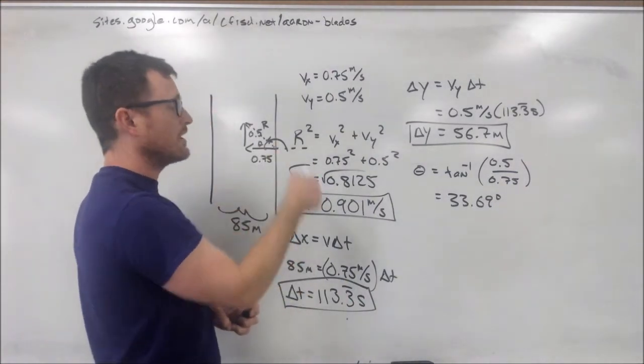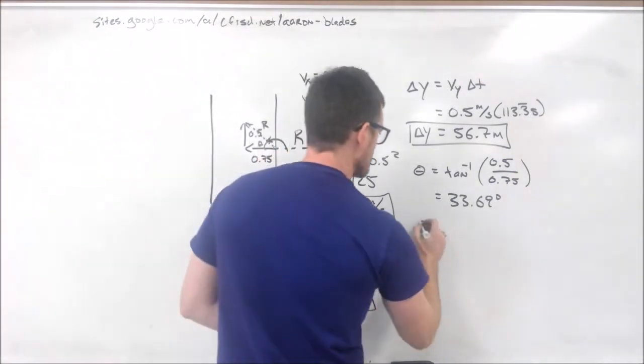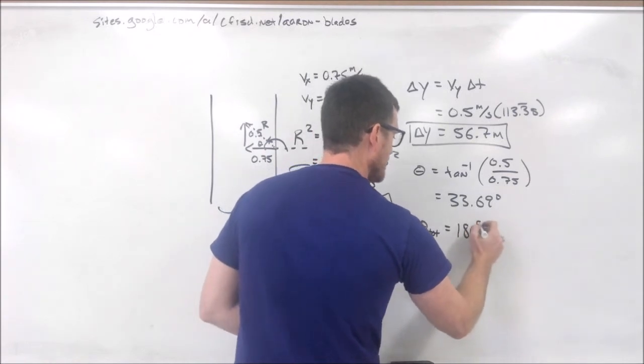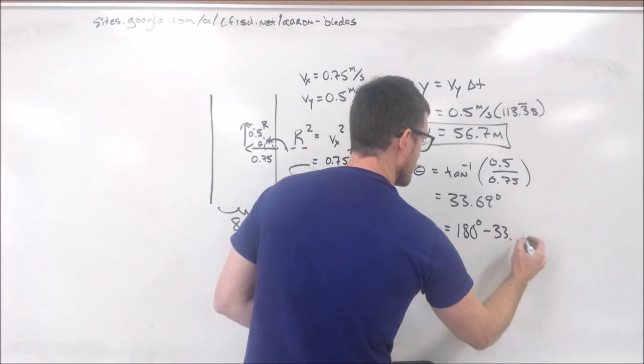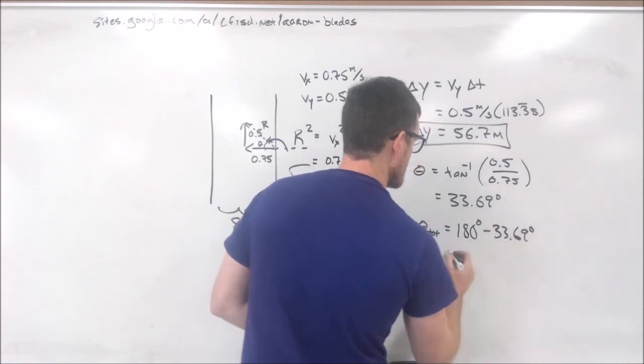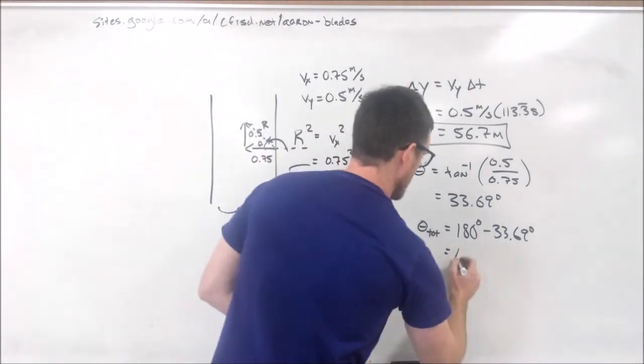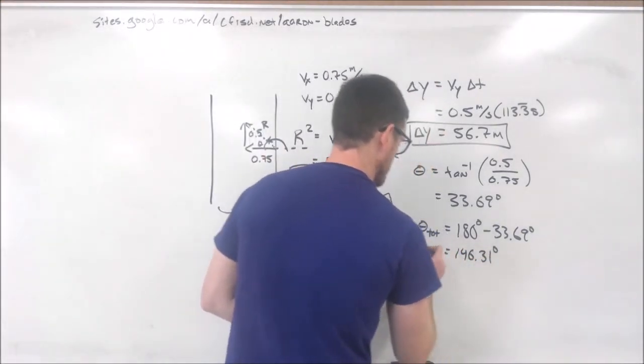But as you can tell, it's supplementary to the angle that we're actually looking for. So, to find the angle we want, let's go ahead and call that theta total. We're going to take 180 degrees minus this angle that we just found, 33.69 degrees. And that ends up giving us an obtuse angle of 146.31 degrees.